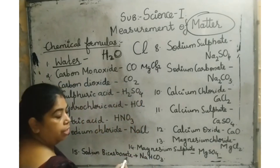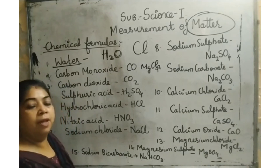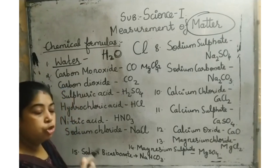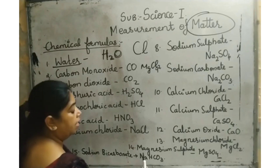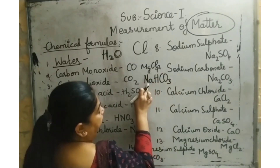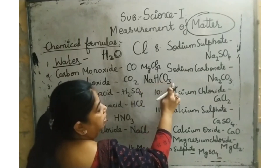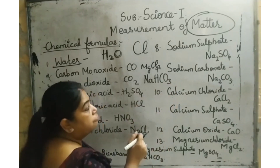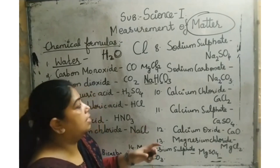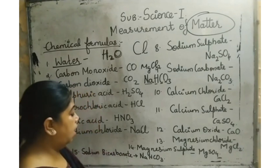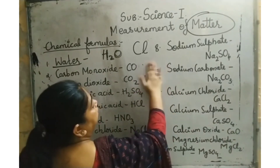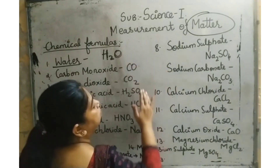The last one is sodium bicarbonate, which you will study in the next chapter on acids, bases, and salts. Sodium bicarbonate's formula is NaHCO3 — sodium (Na), hydrogen (H capital), carbon (C capital), oxygen (O capital), and 3. Four elements combine: sodium, hydrogen, carbon, and oxygen, forming sodium bicarbonate NaHCO3.